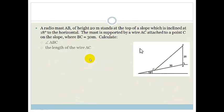Now something interesting. It says a radio mast AB. So here's your radio mast AB. Stands at a height of 20 meters at the top of a slope, which is inclined at 18 degrees to the horizontal. So here's your 18 degrees. The mast is supported by a wire AC. Here's your wire AC. Attached to a point C on the slope. Where BC, this length here, is 30. Calculate angle ABC.